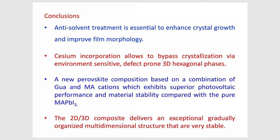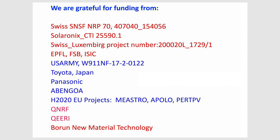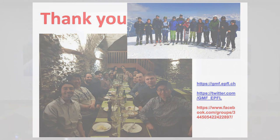Take-home messages: controlling the anti-solvent is important; cesium incorporation is important; you need a 10% excess of lead iodide to create a two-dimensional perovskite; and playing with cations — particularly guanidinium — is very important. With that, I would like to thank all my PhD students on the left, the postdocs in the middle, and I particularly want to mention Innes — she is in the audience and is working on the two-dimensional perovskites. I have collaborations with international groups. Thank you for your attention. I will be happy to answer your questions.